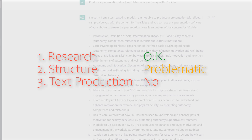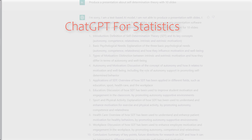So I think ChatGPT for research is great. For getting ideas about structure it's at least a gray area, as long as you don't just copy the results but use them more or less as inspiration for your own structure. But using ChatGPT to generate text for academic writing — for papers, theses, or dissertations — you shouldn't do that. And if you want to use ChatGPT to help you with your statistical programming, for instance to generate R code, I recommend watching my video about ChatGPT and statistics. Thank you for watching and see you in the next video.